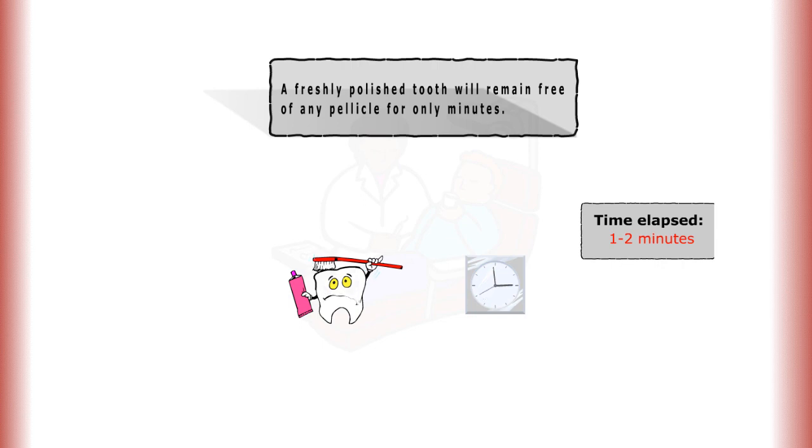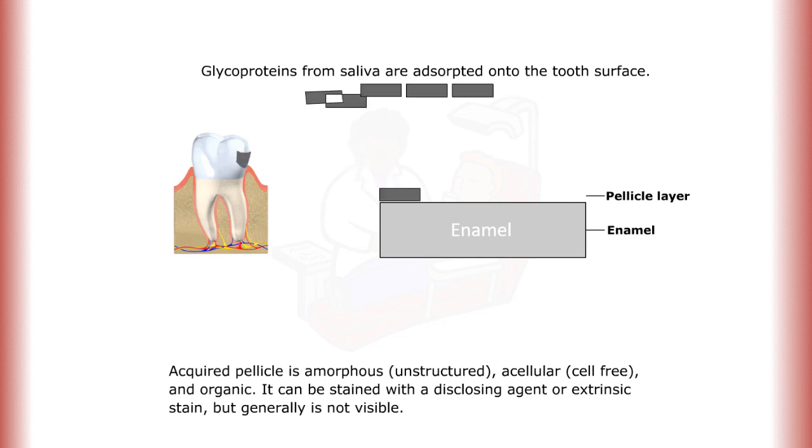A freshly polished tooth will remain free of any pellicle for only minutes. Glycoproteins from saliva are adsorbed onto the tooth surface. Acquired pellicle is amorphous, acellular, and organic. It can be stained with a disclosing agent or extrinsic stain but generally is not visible.